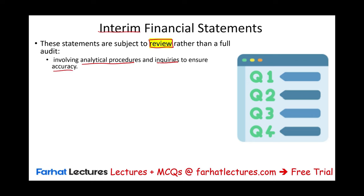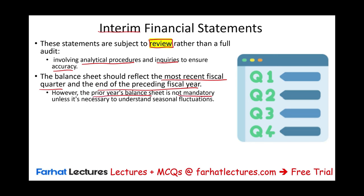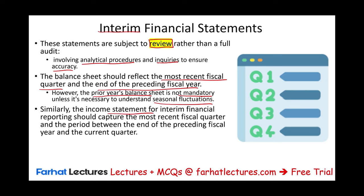We're not doing a full-blown audit for the quarterly statements. The balance sheet should reflect the most recent fiscal quarter and the end of the preceding fiscal year. However, the prior year balance sheet is not mandatory unless you think it's necessary to understand seasonal fluctuation. For the income statement, you report the most recent fiscal quarter and the period from the beginning of the fiscal year to the current quarter. Reporting the 12-month cumulative is also permissible.